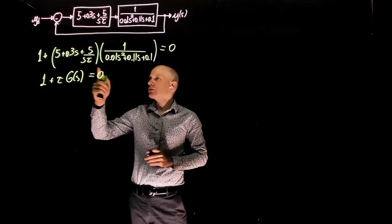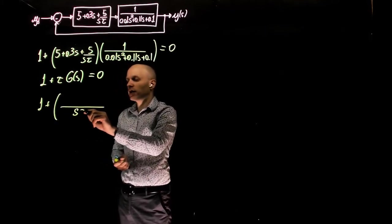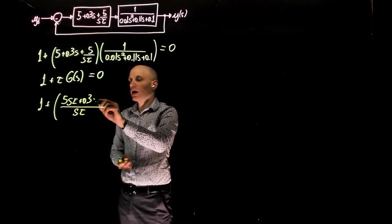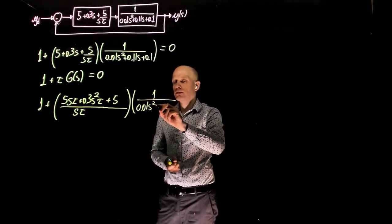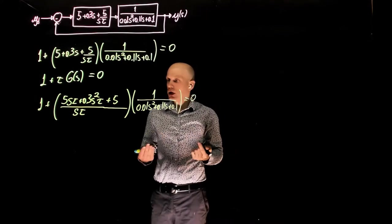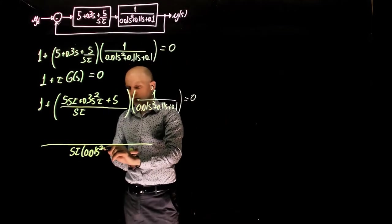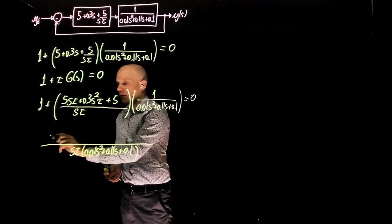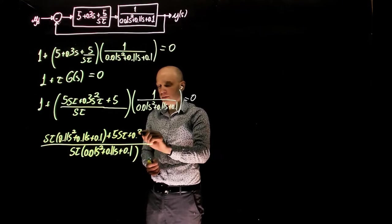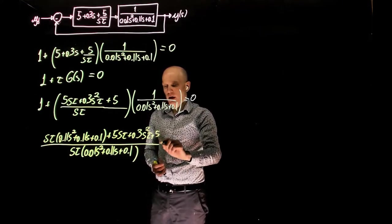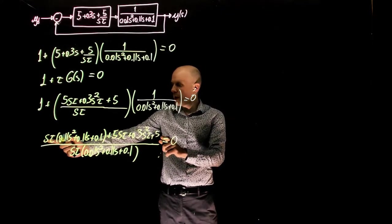We start by finding a common denominator for the controller terms. The common denominator is s times tau, giving us 5s·tau plus 0.3s²·tau plus 5, multiplied by the plant transfer function, equals zero. We then find another common denominator between this term and 1 — that is tau·s times the denominator of the plant transfer function. Expanding: the denominator times 1 is the denominator itself, plus 5s·tau plus 0.3s²·tau plus 5 equals zero. Multiplying through removes the denominator, leaving only the numerator expression.